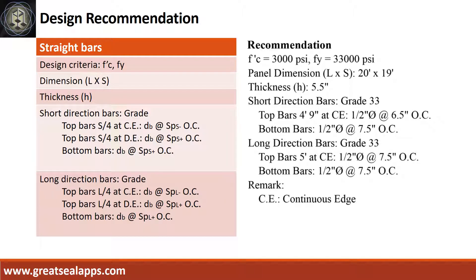Design recommendation: fc prime equals 3,000 PSI, fy equals 33,000 PSI. Panel dimension is 20 feet by 19 feet, thickness 5.5 inches. Short direction bars of grade 33: top bars at 4 feet 9 inches at continuous edge, half-inch diameter at 6.5 inches on center; bottom bars, half-inch diameter at 7.5 inches on center. Long direction bars of grade 33: top bars at 5 feet at continuous edge, half-inch diameter at 7.5 inches on center; bottom bars, half-inch diameter at 7.5 inches on center.